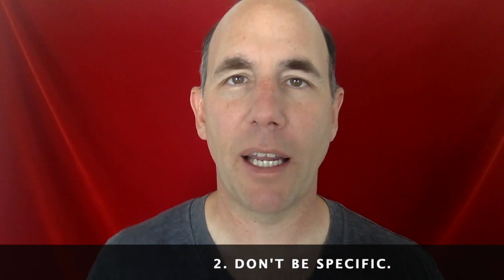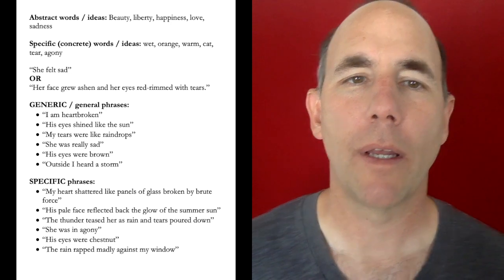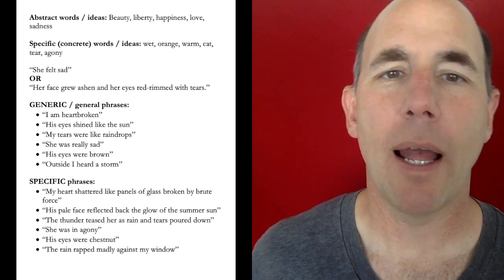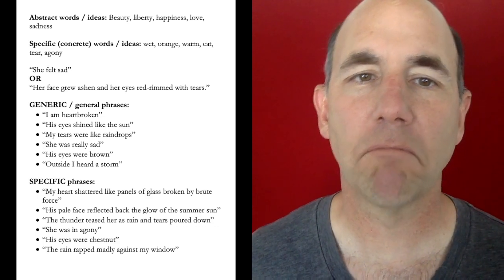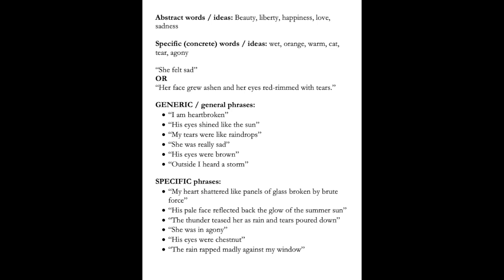Number two: if you want to write a bad poem, don't be specific in your writing. Be very general, generic, and vague. Use abstract words that mean something different to every single person — words like beauty, liberty, happiness, love, sadness. Those words aren't bad, but beauty means a thousand different things to a thousand different people. Here are some concrete words instead: orange, warm, cat, terror — specific words that give you a strong, definite image.